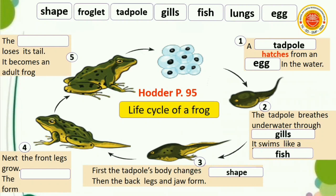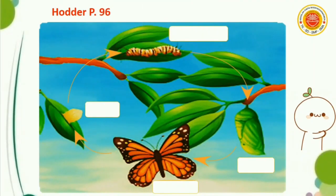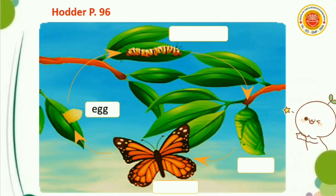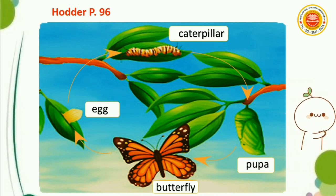Yang keempat, kaki depan tumbuh, titik-titik terbentuk. Apa yang ada di dalam tubuh katak itu untuk bernafas? Paru-paru. Kelima, titik-titik kehilangan ekornya berubah menjadi katak dewasa — itu apa? Anak katak. Pada halaman 96, siklus kupu-kupu yang pertama adalah telur, kemudian berubah menjadi ulat, dan kemudian berada dalam kepompong, hingga berubah menjadi kupu-kupu yang indah.